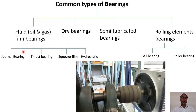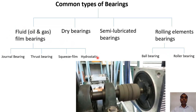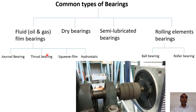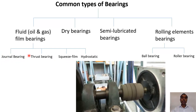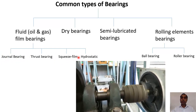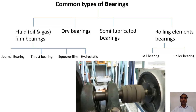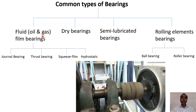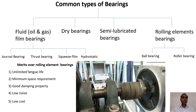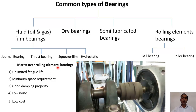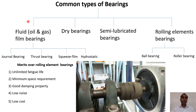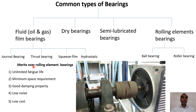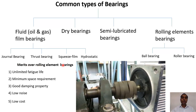In the case of fluid film bearings, there are mainly four subtypes: the journal bearing for radial loading, the thrust bearing for axial loading, squeezed film, and hydrostatic fluid film bearings. Now let us consider the merits of fluid film bearings over rolling element bearings.